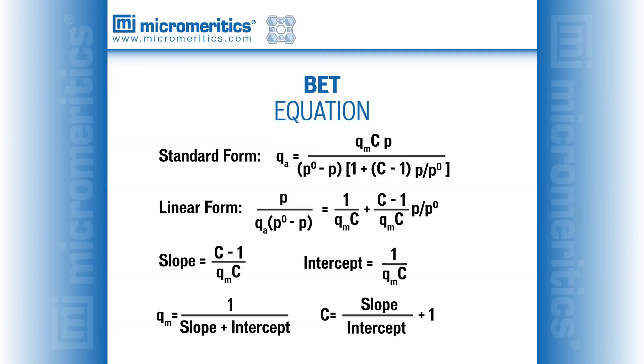The BET equation and its linear form are shown in this slide, where the standard form describes the isotherm where Q sub a is a function of relative pressure. In the BET equation, Q sub a and Q sub m have the same meaning as in the Langmuir equation. However, relative pressure is employed rather than absolute pressure, and C is a constant associated with the adsorption energy.